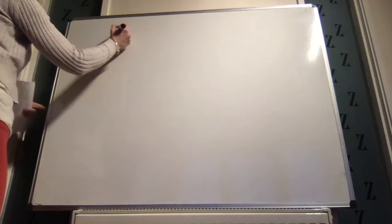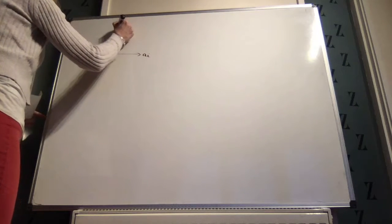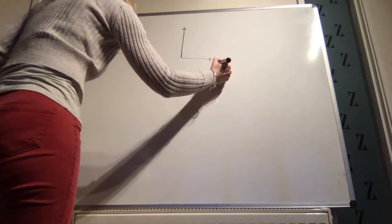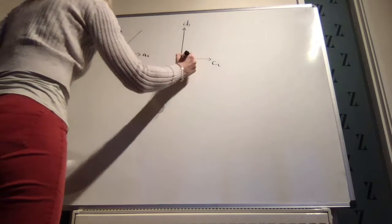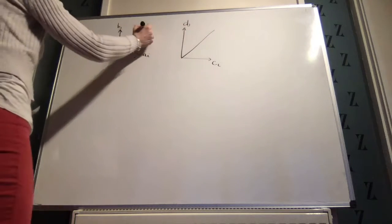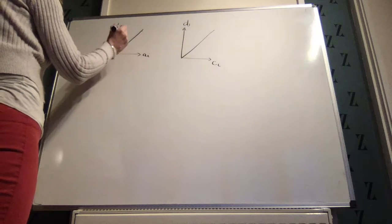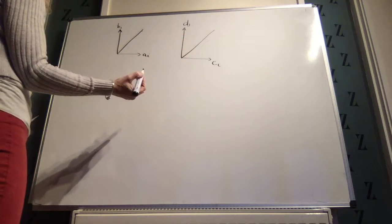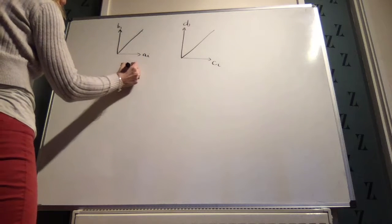Question 6 on page 122. The first bit I did in class, but just to remind you again, if you have a vector ai plus bj and you have another vector ci plus dj, if you are told that those two lines are at right angles to each other, that means that if you get the slope of one line multiplied by the slope of the other, you get minus 1.